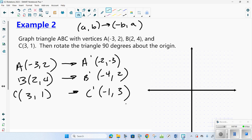I'm going to graph the original in blue and the new one in red. Negative 3 positive 2 there's A, positive 2 positive 4 there's B, positive 3 positive 1. So there is my original triangle ABC. 90 degrees, negative 2 negative 3, negative 4 positive 2 there's B prime, and negative 1 positive 3 C prime. Notice this is the exact same picture, it's been turned 90 degrees.